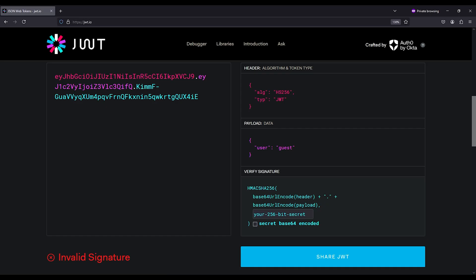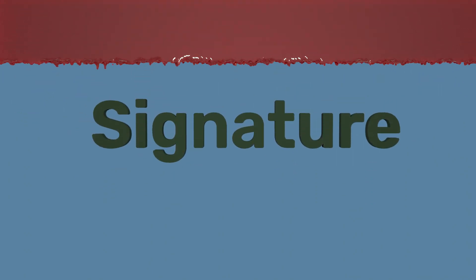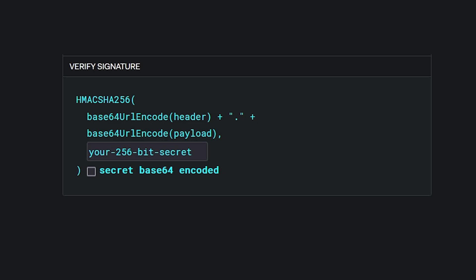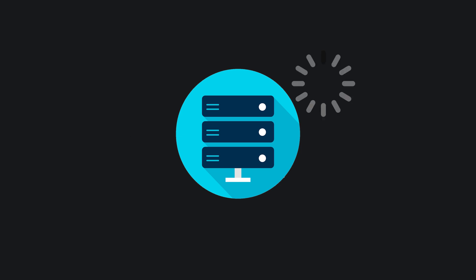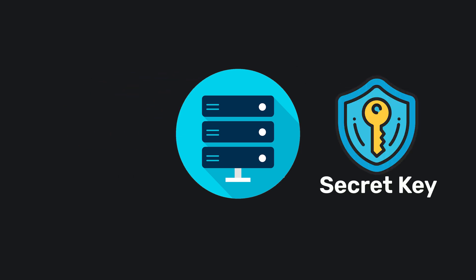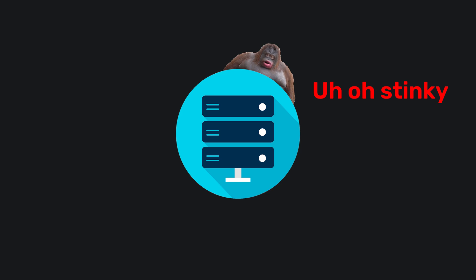Why? Because the signature, the third part of the JWT, doesn't match anymore. Think of it like this: the header and payload are scrambled together with a secret key, and the output is the signature. If we know the secret key, we know what the signature should equal. That's what it means when the signature does not match — the server tries to verify it on its end using your custom payload and the secret key stored on the server. If the resulting signature doesn't match the one that you send, that means something was tampered with.